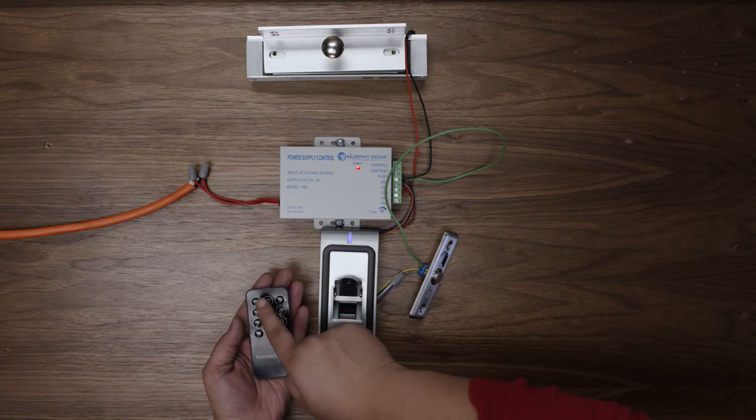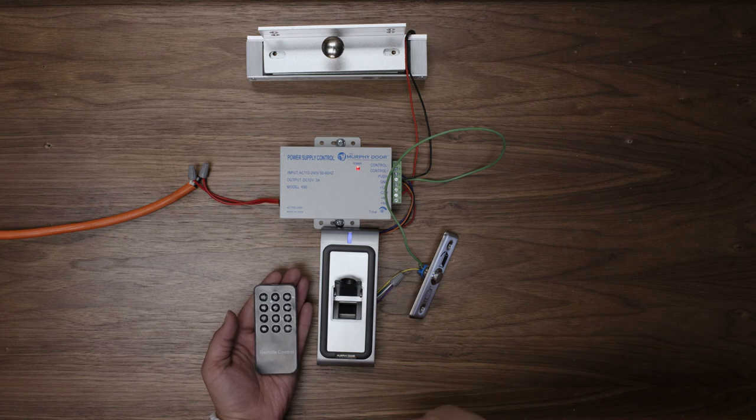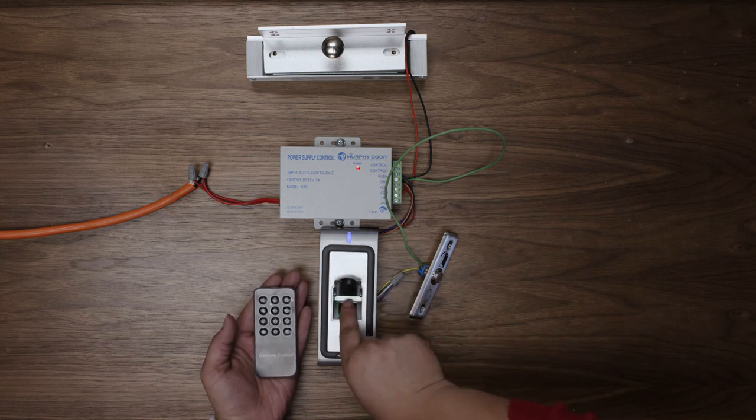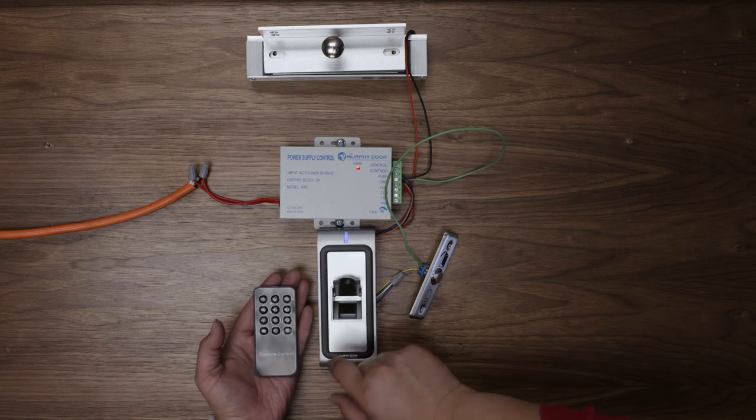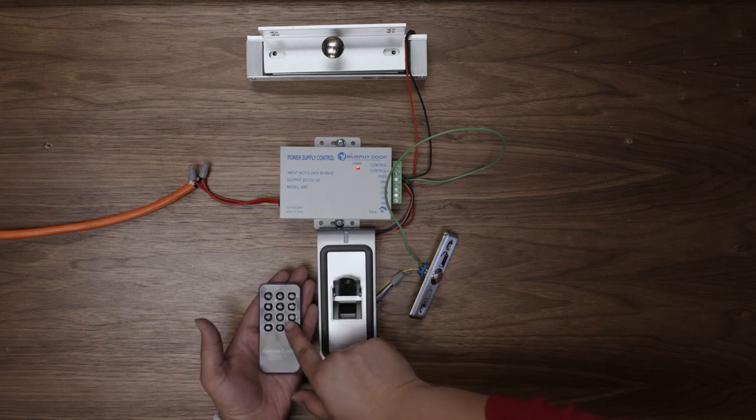The light will turn blue and now press one to set up a user. Scan your user fingerprint two times. If the scan is successful, the blue light will flash. On the second scan, it will flash twice, meaning that the user has been successfully created.